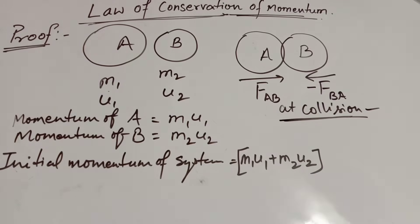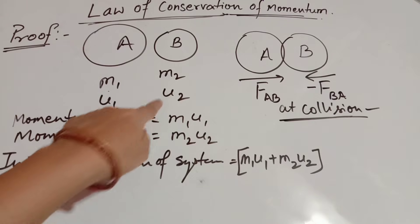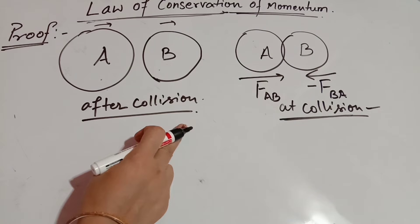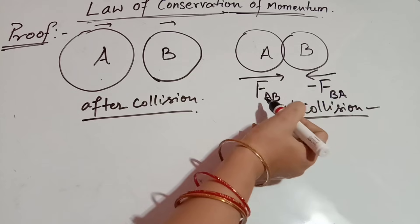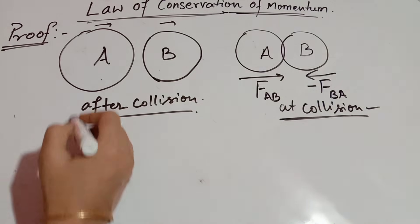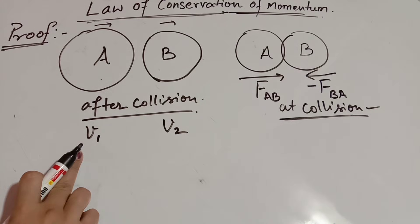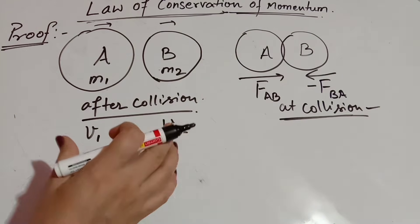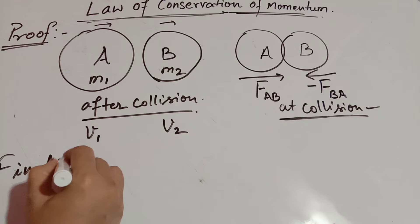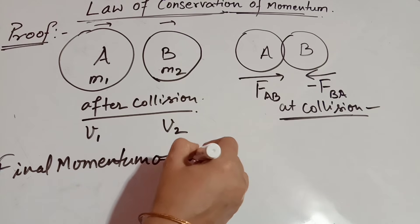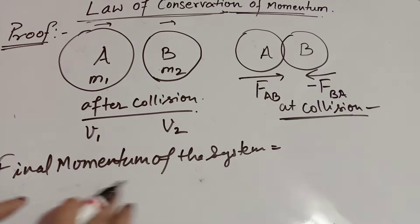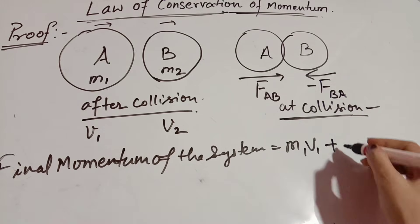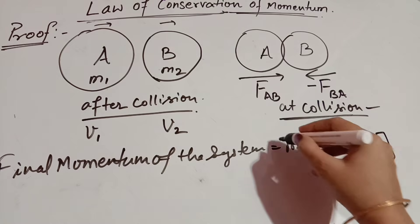When both objects collide with each other, after the collision, the initial velocity changes to final velocity V1 and V2. After collision, the initial velocities U1 and U2 become V1 and V2, while the mass remains M1 and M2. The final momentum of the system is: momentum of object A is M1 V1, plus momentum of object B is M2 V2.